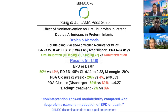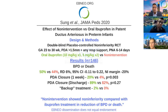They randomized 146 infants. Death or BPD was 6% lower with no intervention. They were 95% certain that death or BPD could only be as much as 11% higher to 22% lower with no intervention compared to treatment with ibuprofen.